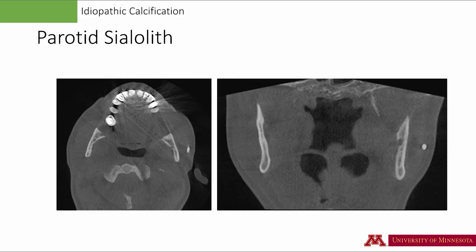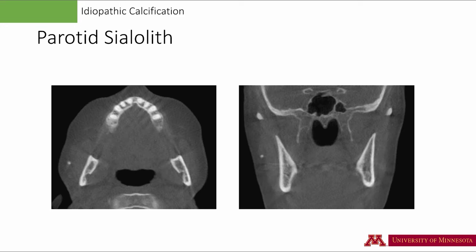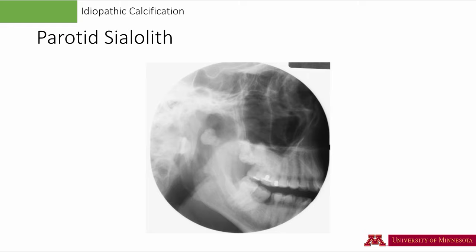Parotid sialoliths are rare. As you would expect, the parotid gland being on the buccal aspect of the mandible, you will also see the sialolith on the buccal aspect of the ramus. Again, the outline is smooth and well-defined with uniform density. Another example of a parotid sialolith, this time on the right side — on a lateral skull or panoramic radiograph, the sialolith may be superimposed over the ramus. Earlier we had seen tonsillar calcifications, which are multiple. A parotid sialolith is usually solitary.